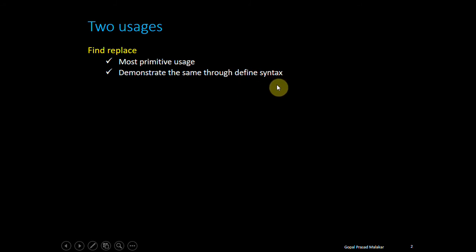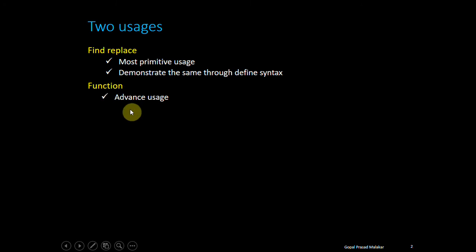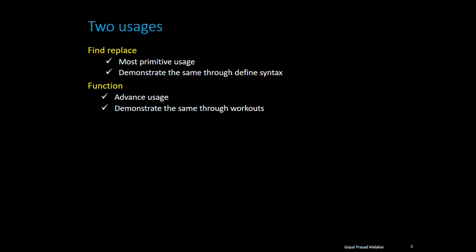The next and more advanced usage of SAS macro is the SAS function kind of situation. This is a little advanced and it can show you how to apply a fair bit of intelligence — you can think of it like: if this is the situation, do this; otherwise do that. So these are the two usages of SAS macros.